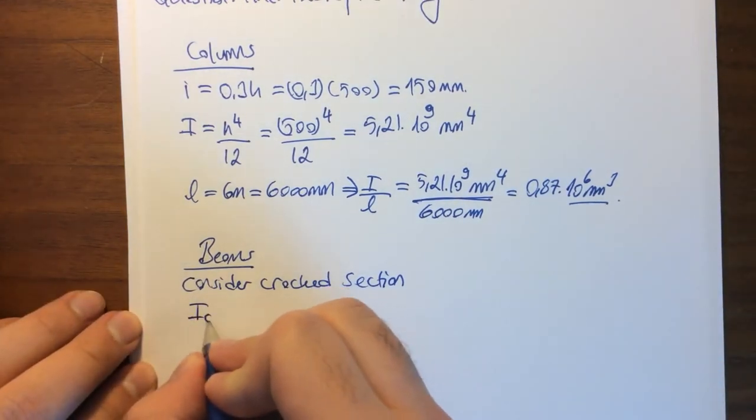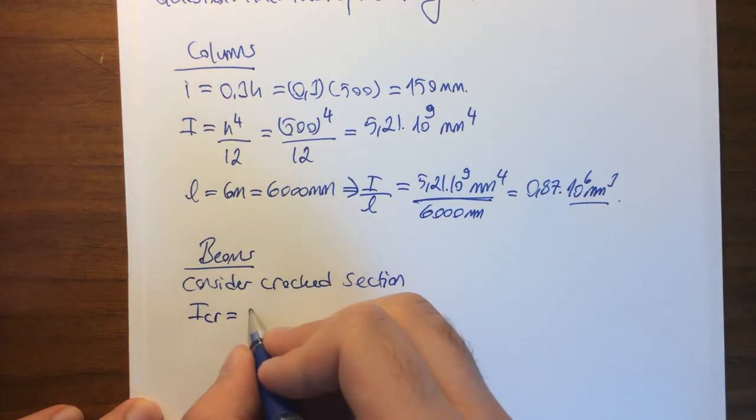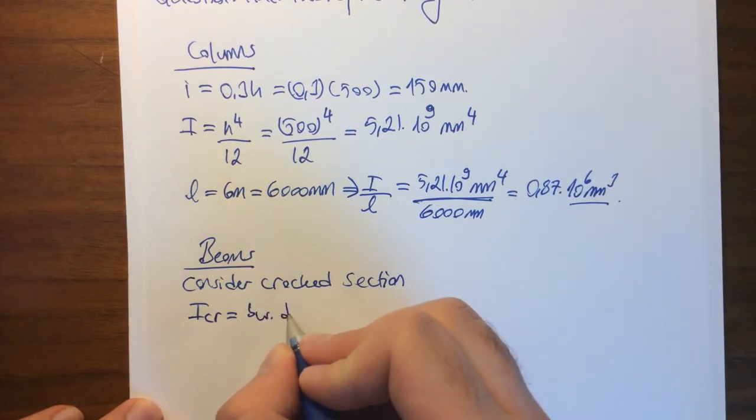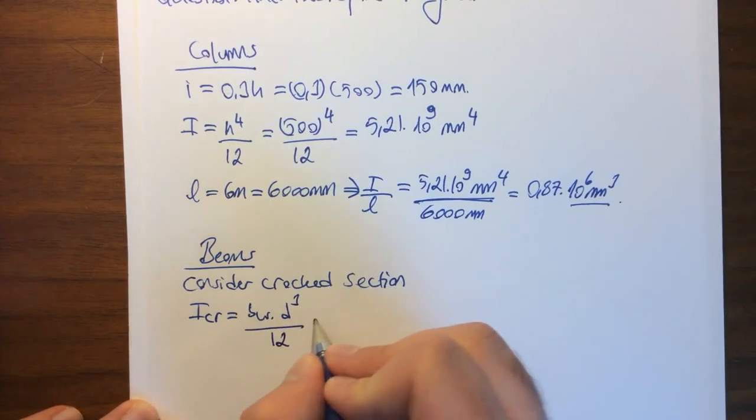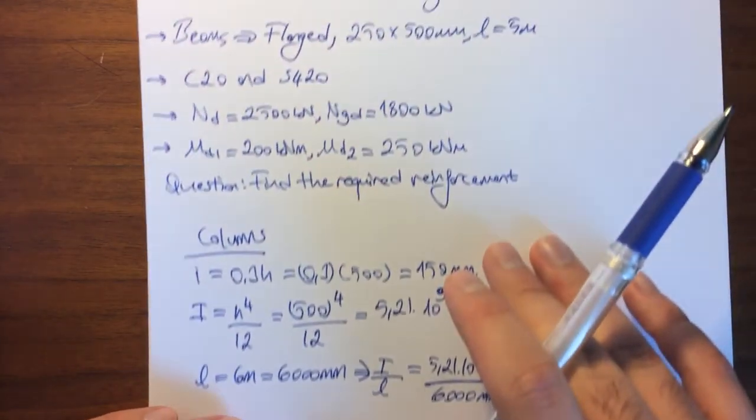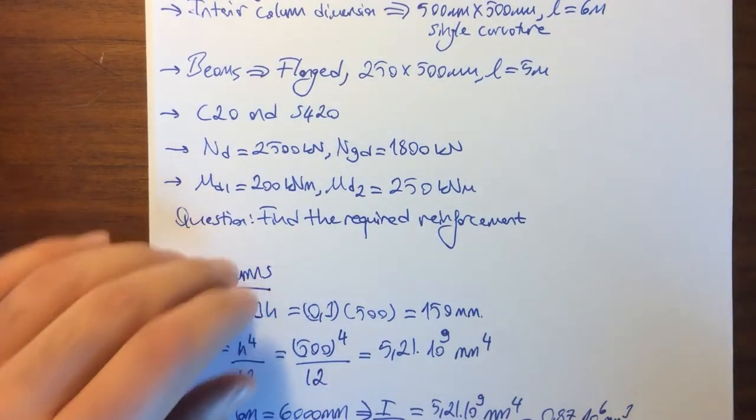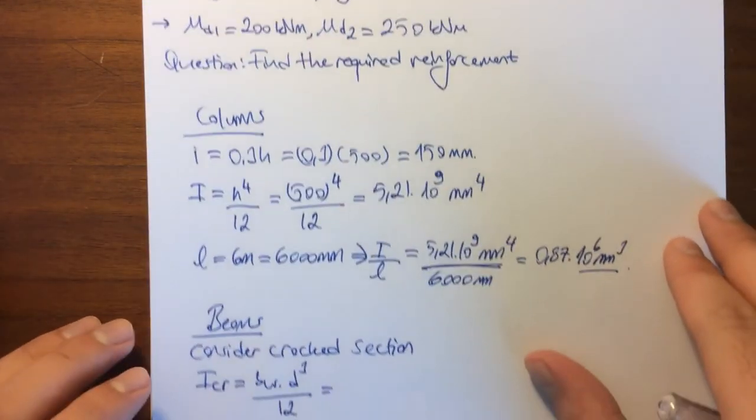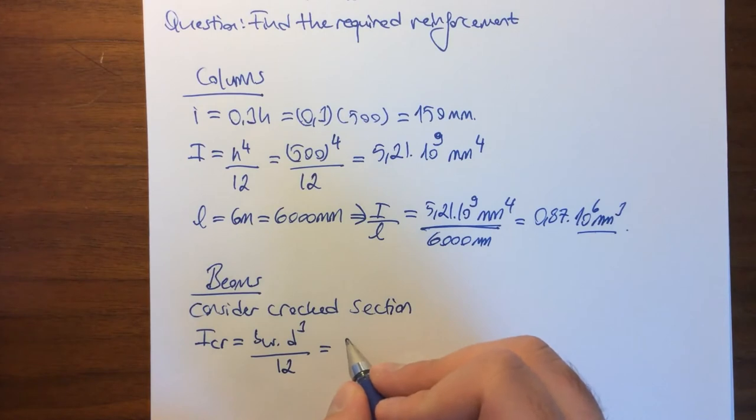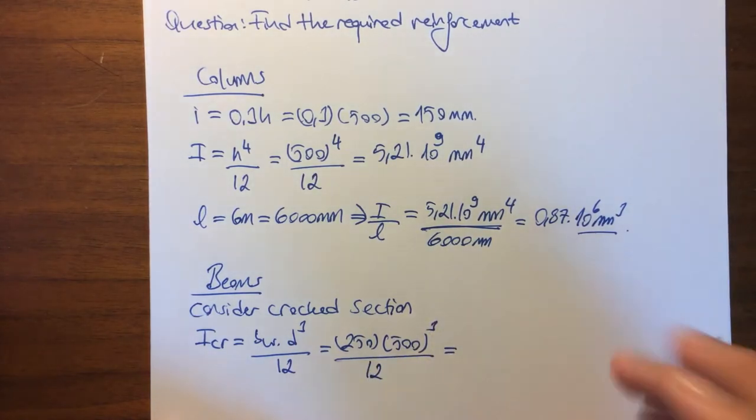I'm expressing the cracked moment of inertia as I-cracked, which can be computed as bw times d cubed over 12. In that case, our bw is 250 and d is 500, all in millimeters. So bw is 250, d is 500 raised to the third power, divided by 12, and we get 2.6 × 10^9 millimeters to the fourth power.